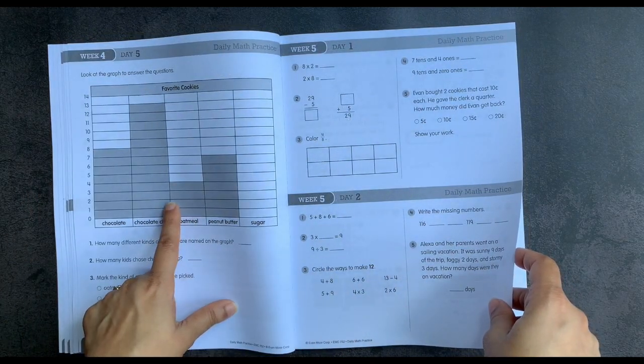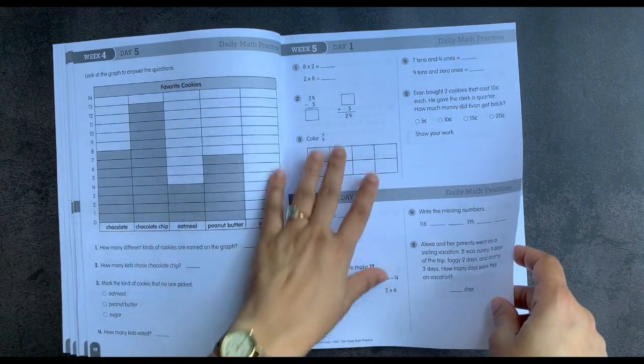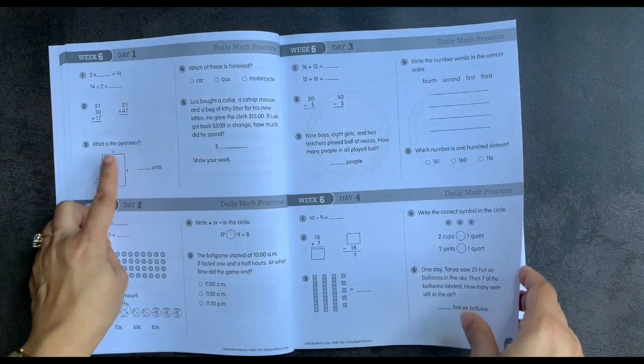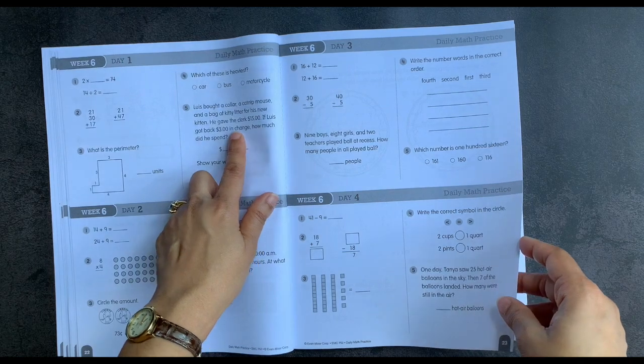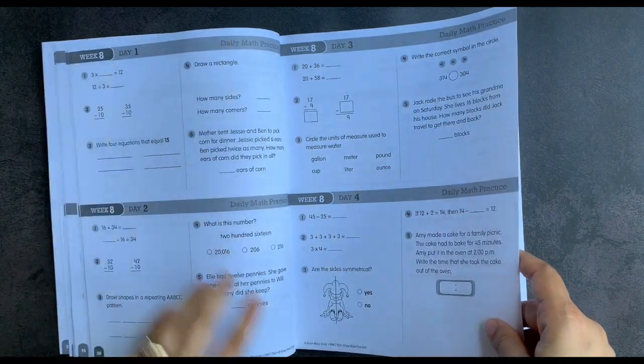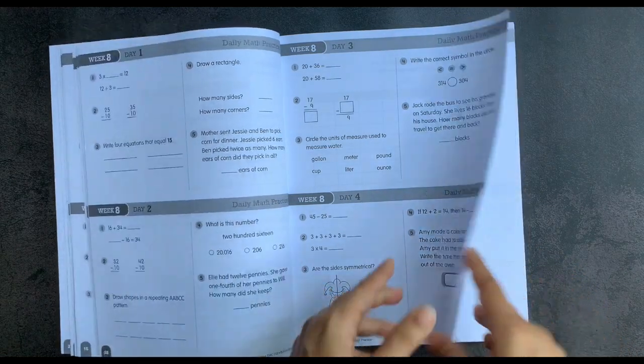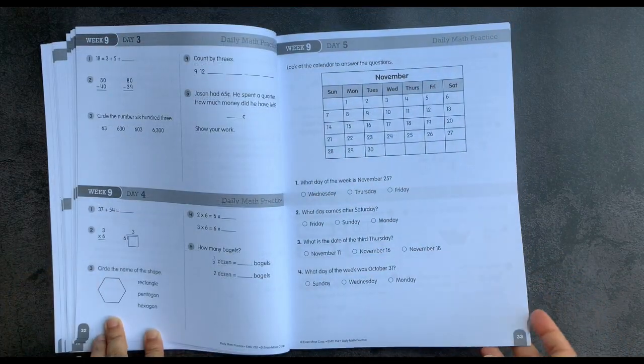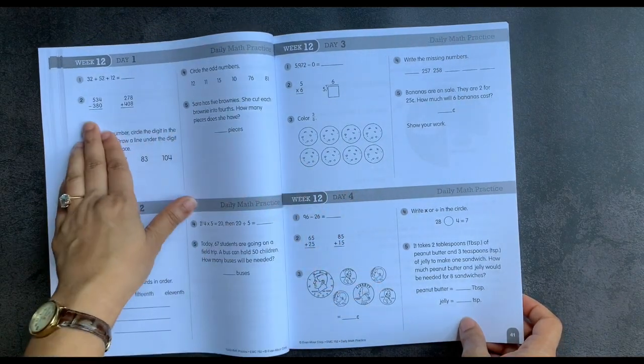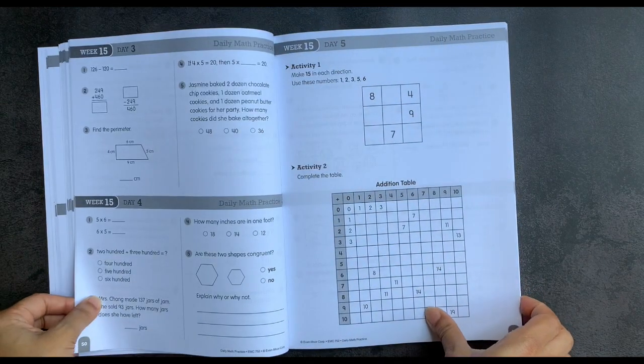So as we go through you can see there's all different types of problems including fractions, multiplication, arithmetic, place value, and charts and graphing. Here's perimeter, word problems with money, equation writing, writing multiplication and division in different ways, symmetry, shape attributes, calendar skills.